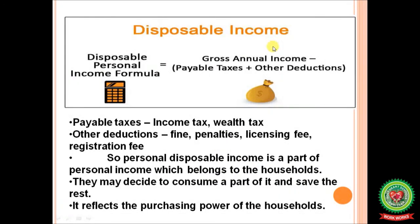Disposable income: suppose my gross annual income is Rs 10,000 and I have to pay taxes and other deductions. After deduction of Rs 2,000 in the form of income tax, wealth tax, and other deductions like fines, penalty, forfeiture, licensing fee, and registration fee, I will get personal disposable income — that is Rs 10,000 minus Rs 2,000, which equals Rs 8,000. So Rs 8,000 is my disposable income. Personal disposable income belongs to the households; they may decide to consume a part of it and save the rest. It reflects the purchasing power of the household — with more disposable income and lesser taxes, our purchasing power is more.